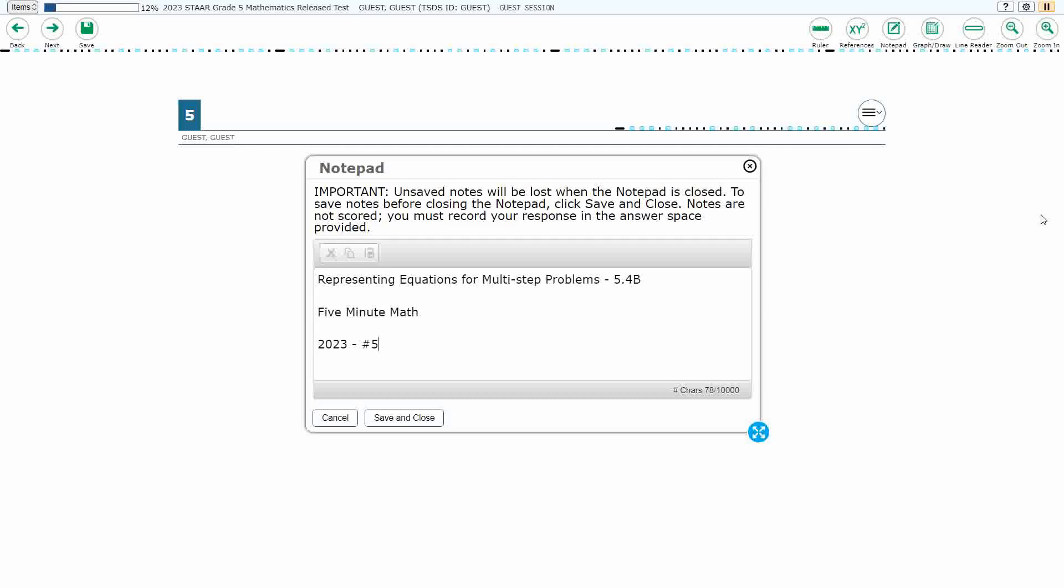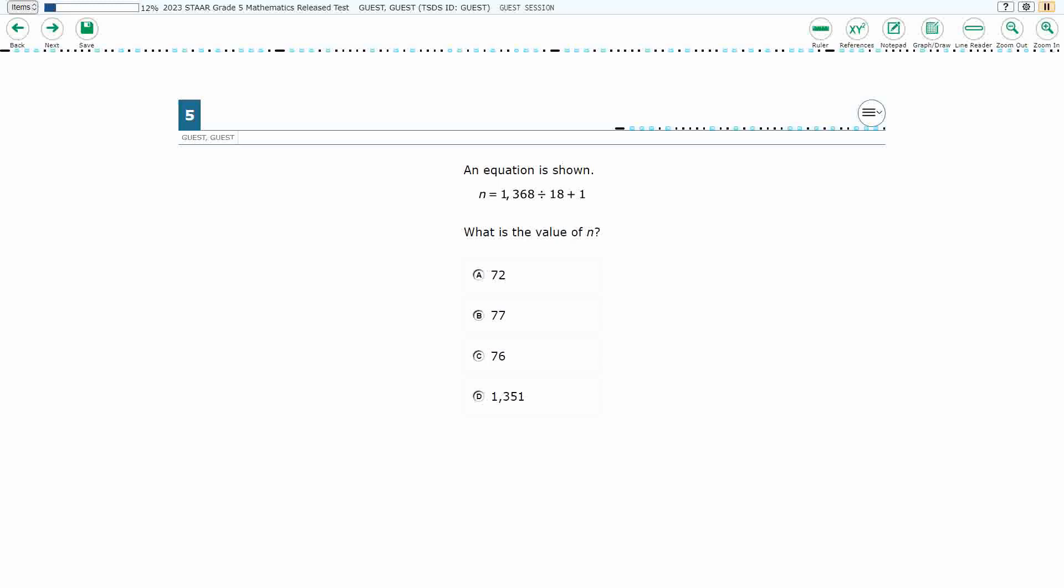Hello and welcome to 5-Minute Math. Today we are looking at the fifth grade concept of representing equations for multi-step problems. This is standard 5.4b in the great state of Texas and we are using item number 5 of the 2023 released STAAR test.